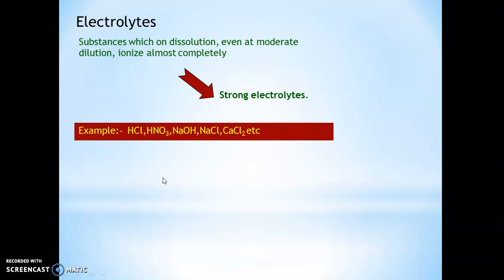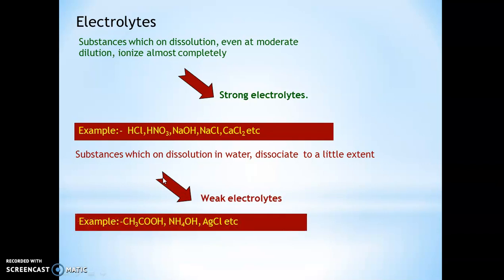Second, the substances which on dissolution in water do not completely dissociate. For example, acetic acid CH3COOH, NH4OH, HCN. Suppose you take 10 molecules and dissolve them in water, the whole 10 molecules do not get dissociated into ions. Maybe 6 dissociate and 4 remain, which means they do not completely dissociate into ions. This is how we call them weak electrolytes.